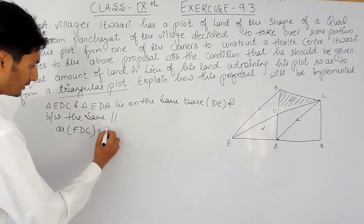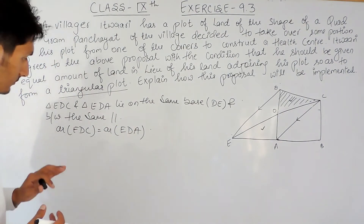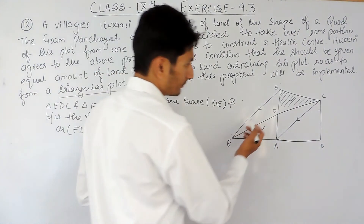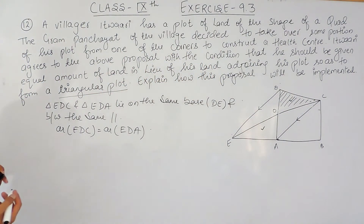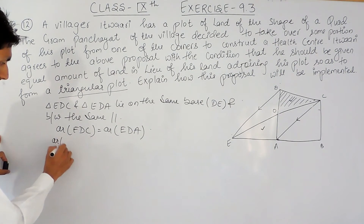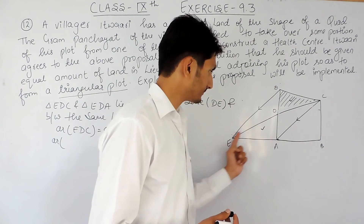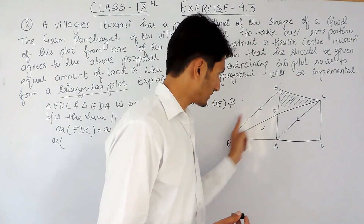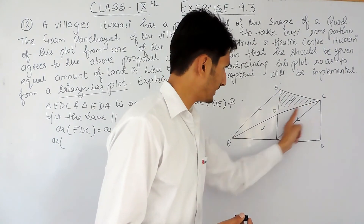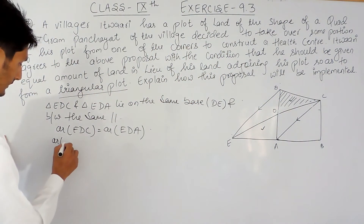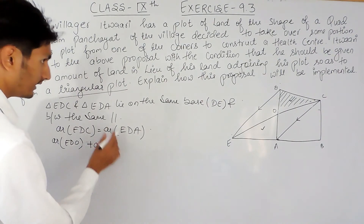The area of triangle EDC must be equal to the area of triangle EDA. Triangle EDC can be split into two parts: the first is DOE and the second is DOC. So the area of EDC equals area of EDO plus area of DOC.